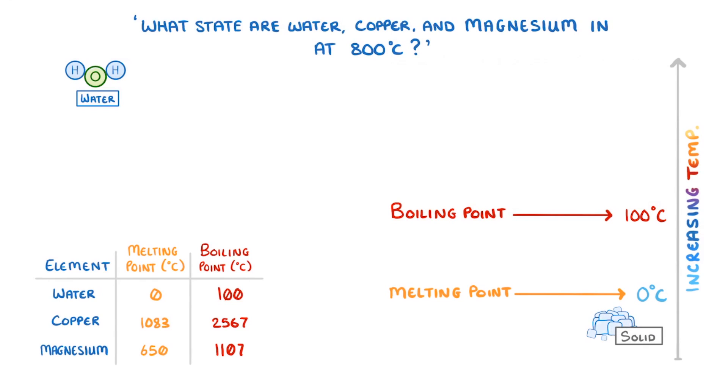Then at 0 degrees it melts into a liquid, and it will stay liquid for all temperatures up to 100 degrees, at which point it boils and becomes gaseous water vapour. And stays a gas as we increase the temperature further.